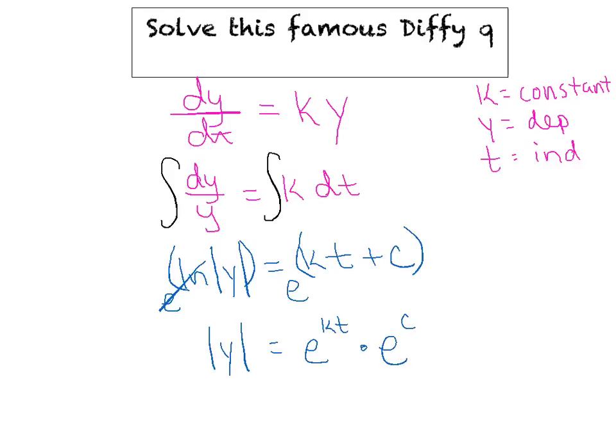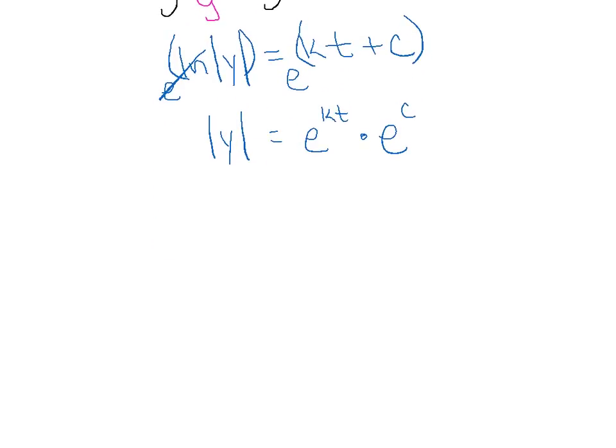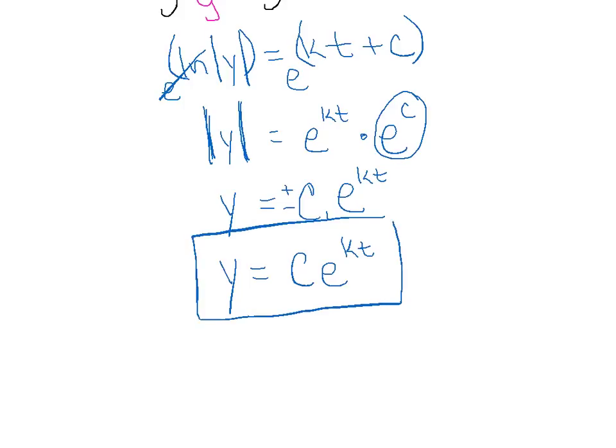Let's see if I can slide the screen a little bit here. Now we're going to say that Y equals, we're going to say that E raised to the C is just some new constant here, times E raised to the KT power. Basically, when we took these absolute values away, that created a plus or minus on the right side, but that plus or minus sign gets absorbed by the constant. The constant itself will decide whether he wants to be positive or negative once we plug in our initial conditions. Here, ladies and gentlemen, is what we would consider the general solution of the very famous Diffy Q.